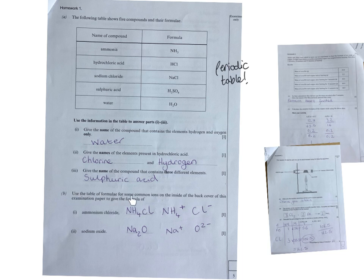Use the table of formula of common ions on the inside of the back cover of this examination paper to give the formula of aluminium chloride. So ammonium chloride is positive, chlorine is negative, so they're just going to be the same because they've got no charge. And then sodium and oxide, so if you were to do, put them at the top, remove the charges, top, swap, and then drop. Remember you don't need to include the one. So that's the first little question.